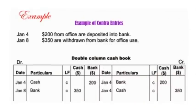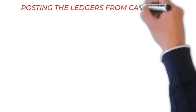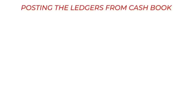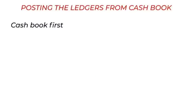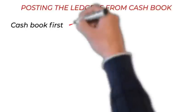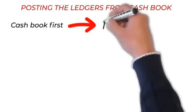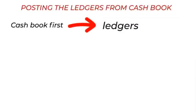The balances remaining in the cash and bank columns will be carried forward to the next month. Posting the ledger from the cash book: the cash book forms part of the double entry system. In the preparation of accounts, the best way is to write up the cash book first, since it is a book of prime entry, and then transfer the items to the individual ledgers. This makes the recording simple, easy, and convenient.